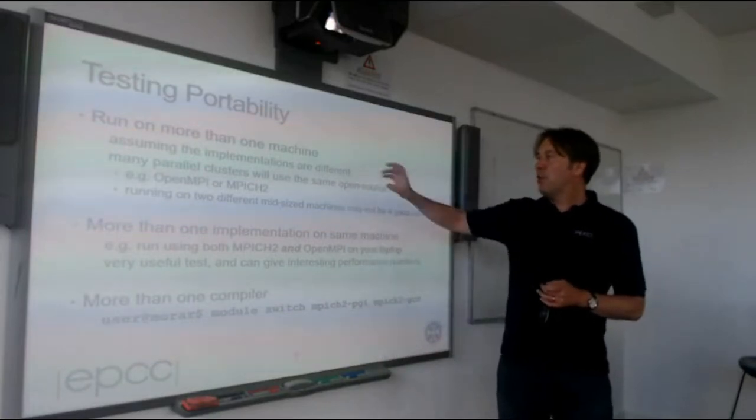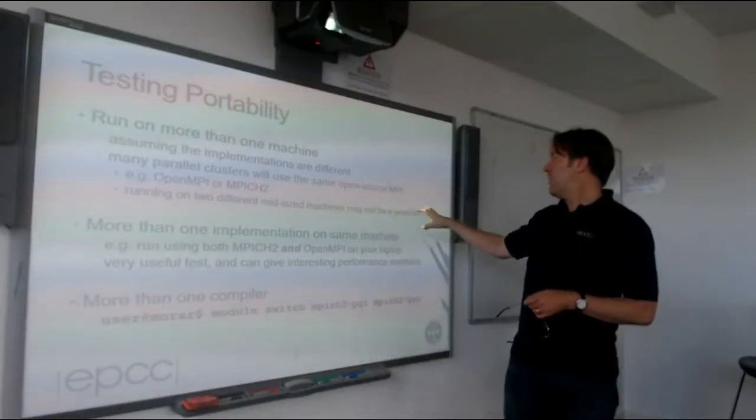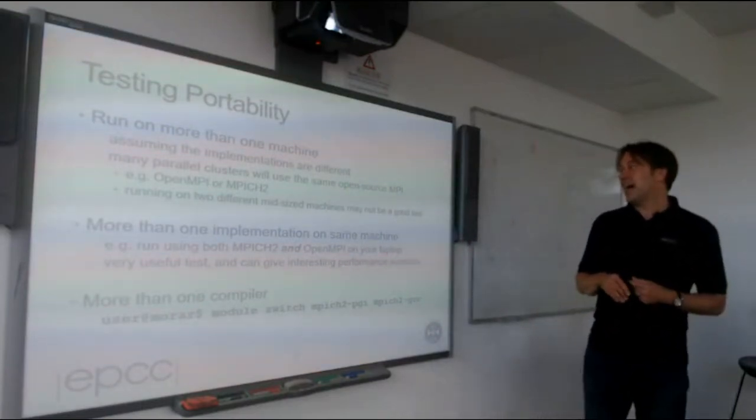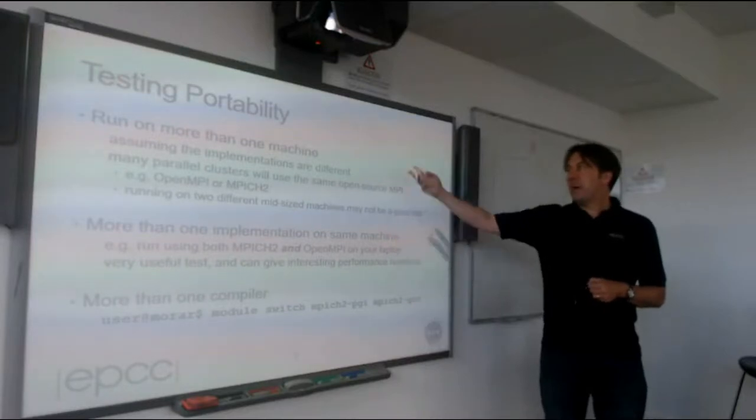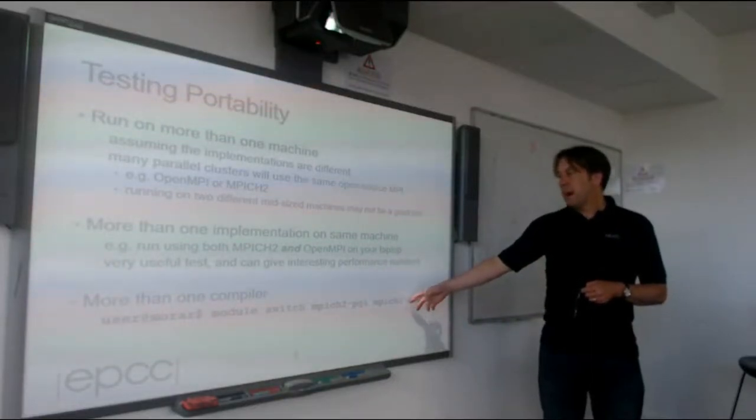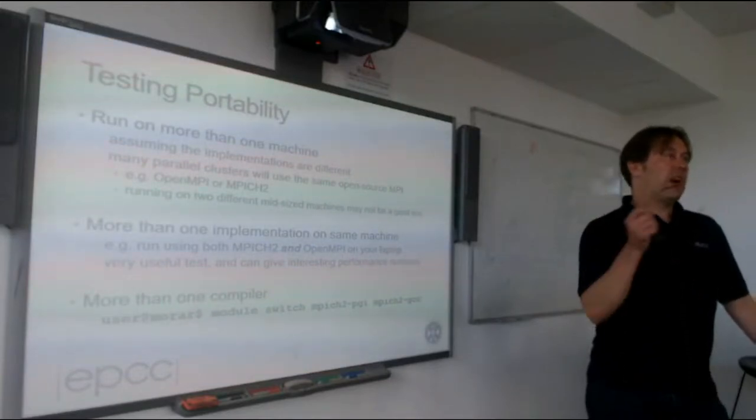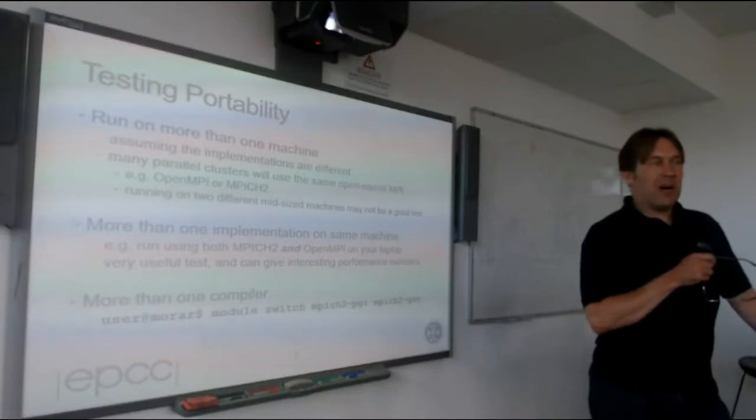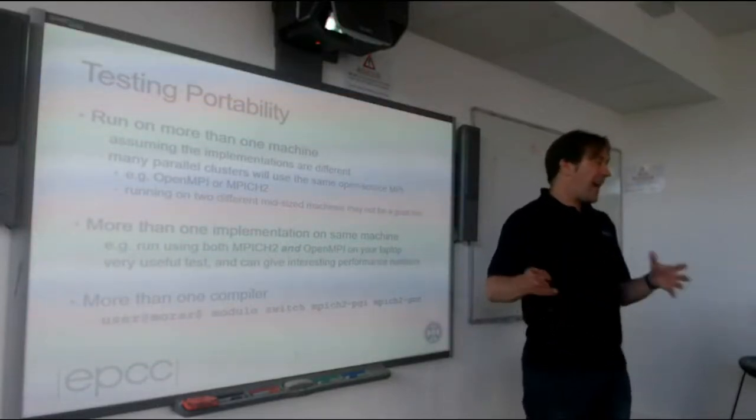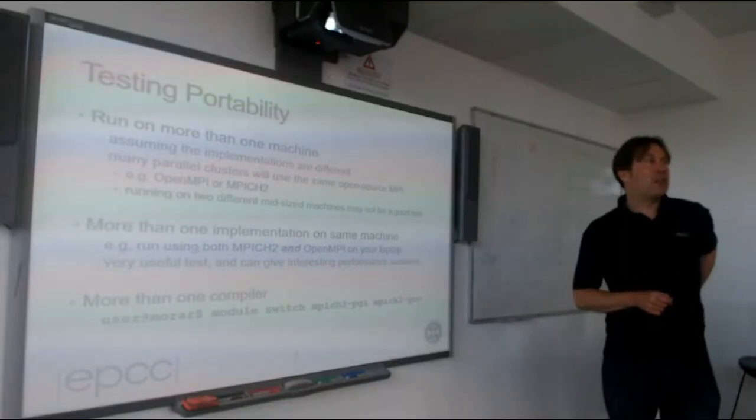People will develop a code for 10 years using nothing more than their laptop and G Fortran. And then they try and port it to another machine and complain it won't compile onto the Cray Fortran compiler. Just because your code compiles with G Fortran doesn't mean it's correct. So you need to test portability. Run on more than one machine, but actually you're not really testing the hardware here. You really want to run on multiple MPI implementations. Running on two different mid-site machines may not be a good test. What I'm saying is running on two machines, which might even have different hardware, might not be a good test for correctness. They might both have GNU compilers and open MPI. So actually, the best thing you can do is to have more than one MPI implementation on the same machine.